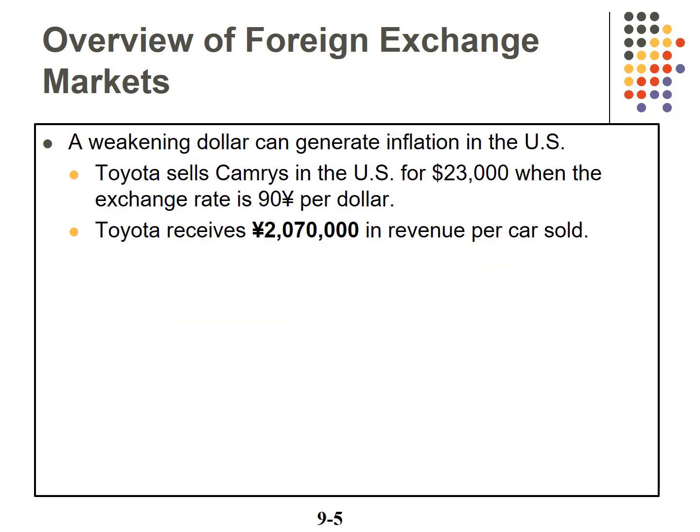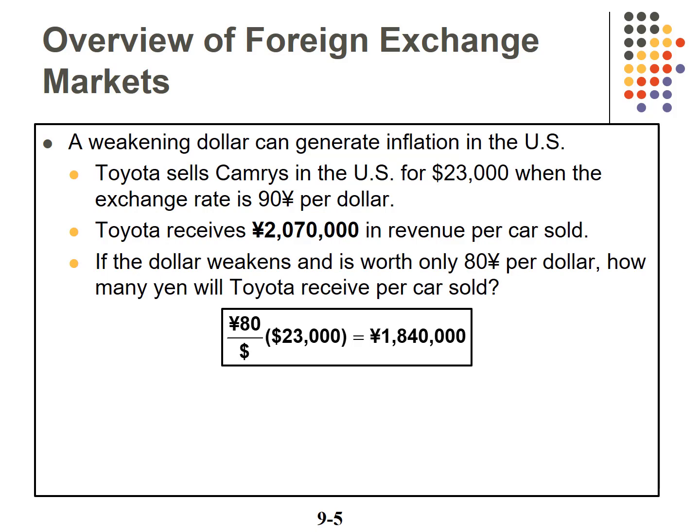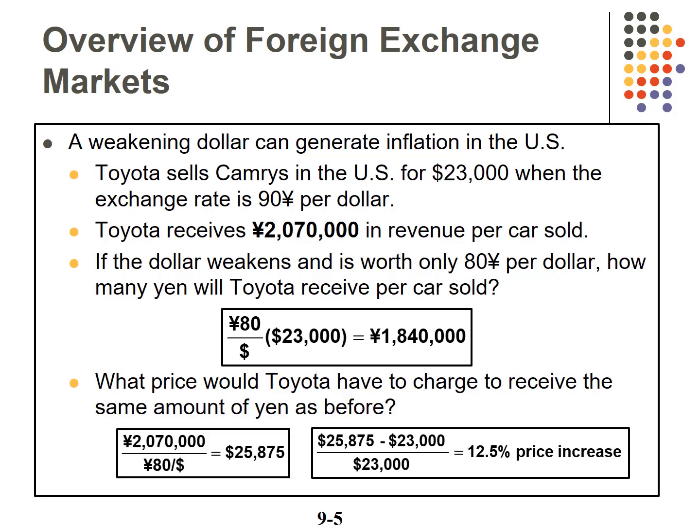A weakening dollar can result in inflation. Toyota sells Camrys in the US for $23,000. The exchange rate is 90 yen to the US dollar, so Toyota receives 2,070,000 yen per car. If the US dollar weakens to only 80 yen to the dollar, Toyota will only receive 1,840,000 yen. Toyota would have to raise the price of the Camry in the US to $25,875 — a 12.5% increase — to receive the same amount of yen.